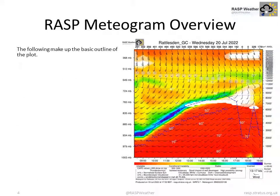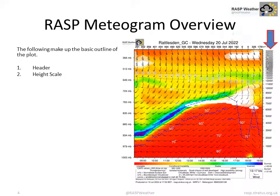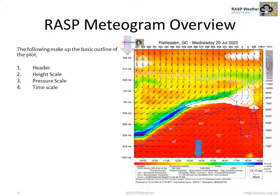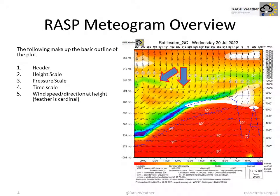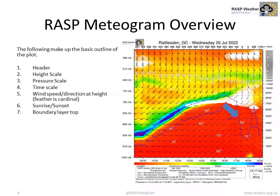RASP meteogram overview. The following make up the basic outline of the plot: header, height scale in feet, pressure scale in millibars, time scale, wind speed and direction at height, sunrise and sunset, and the boundary layer top shown as the blue dashed line.